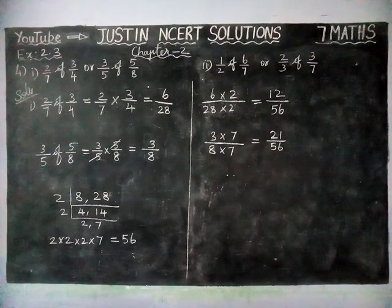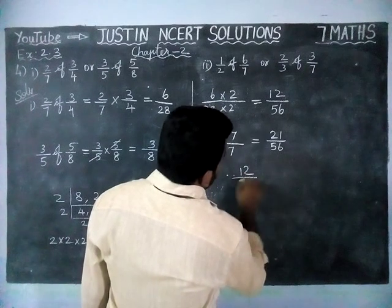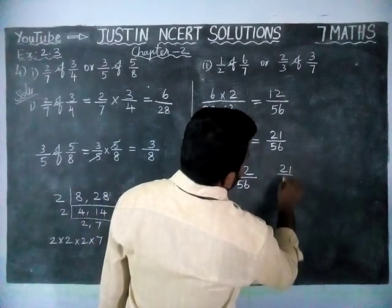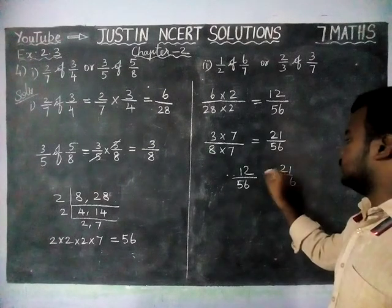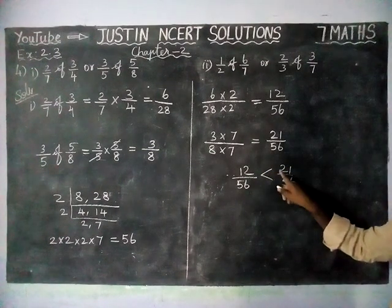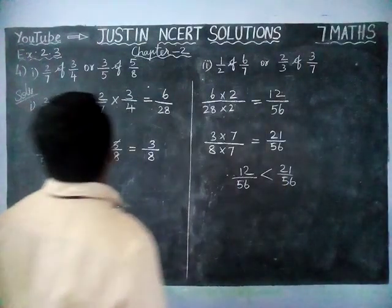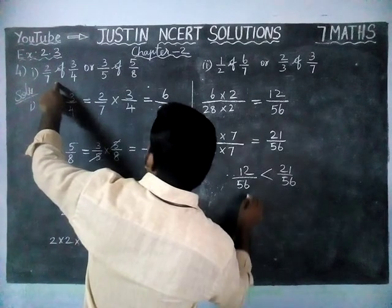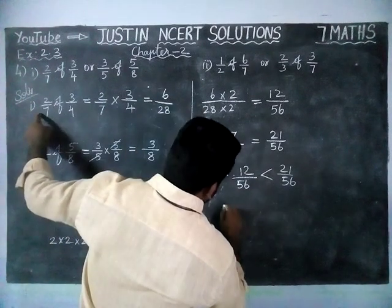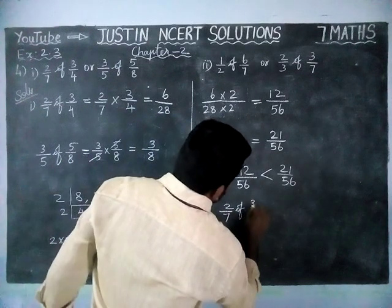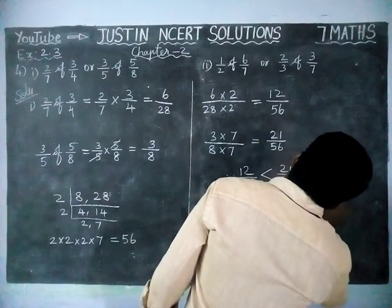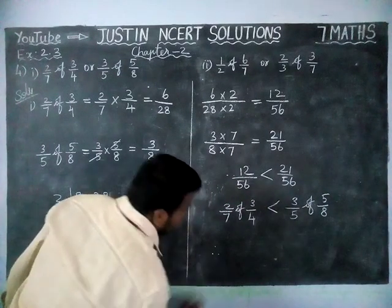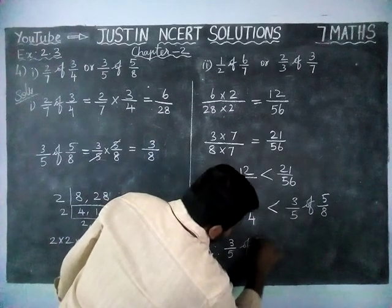Now we can find which one is greater. Comparing 12/56 and 21/56, we see that 21/56 is the greatest value. So the sign is less than: 12/56 is less than 21/56. Therefore, 2/7 of 3/4 is less than 3/5 of 5/8. Therefore, 3/5 of 5/8 is the greater value.